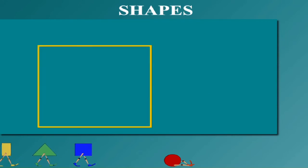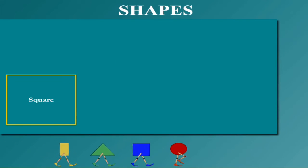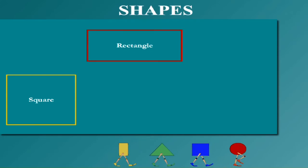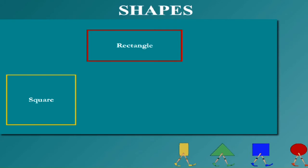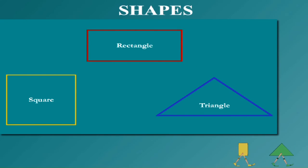Here is a yellow square, a red rectangle, and a blue triangle.